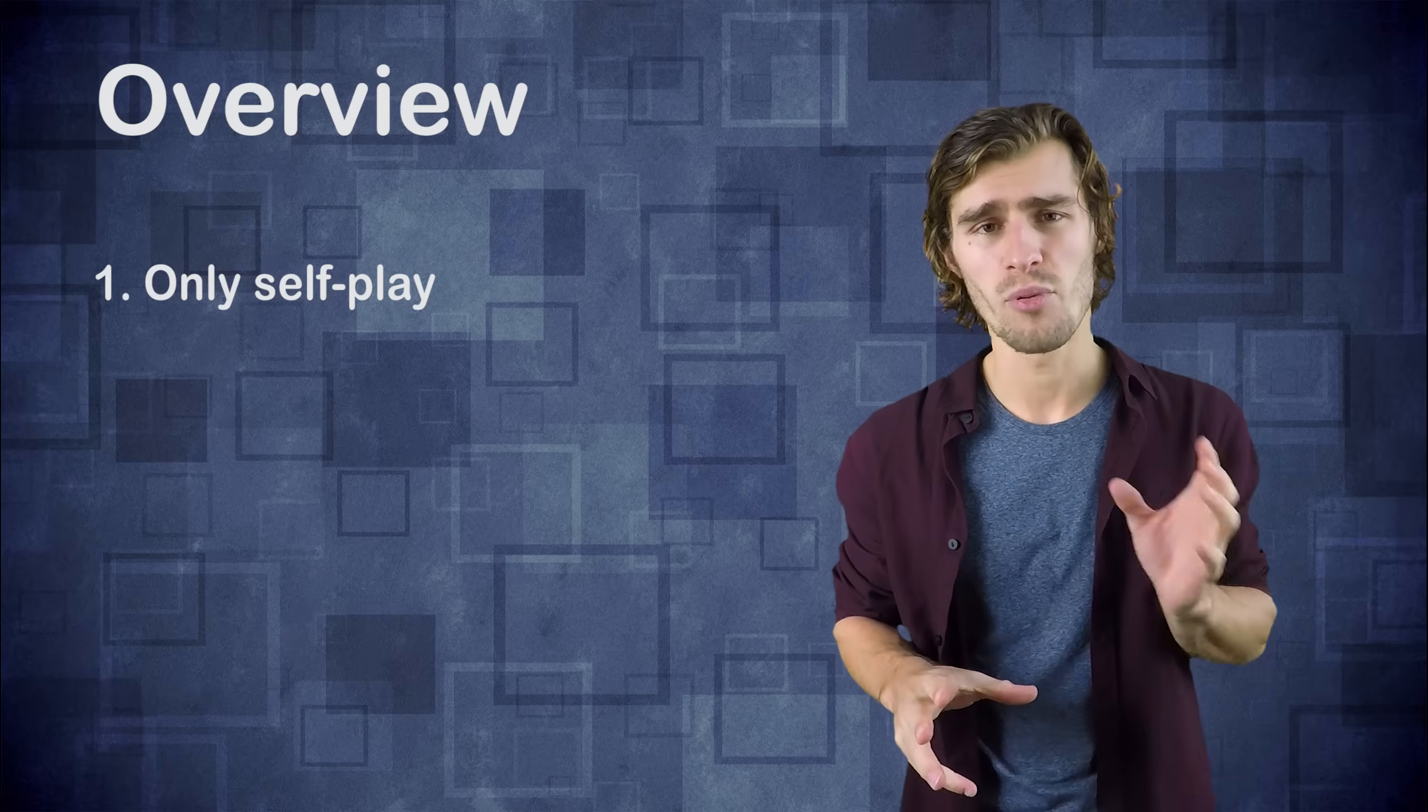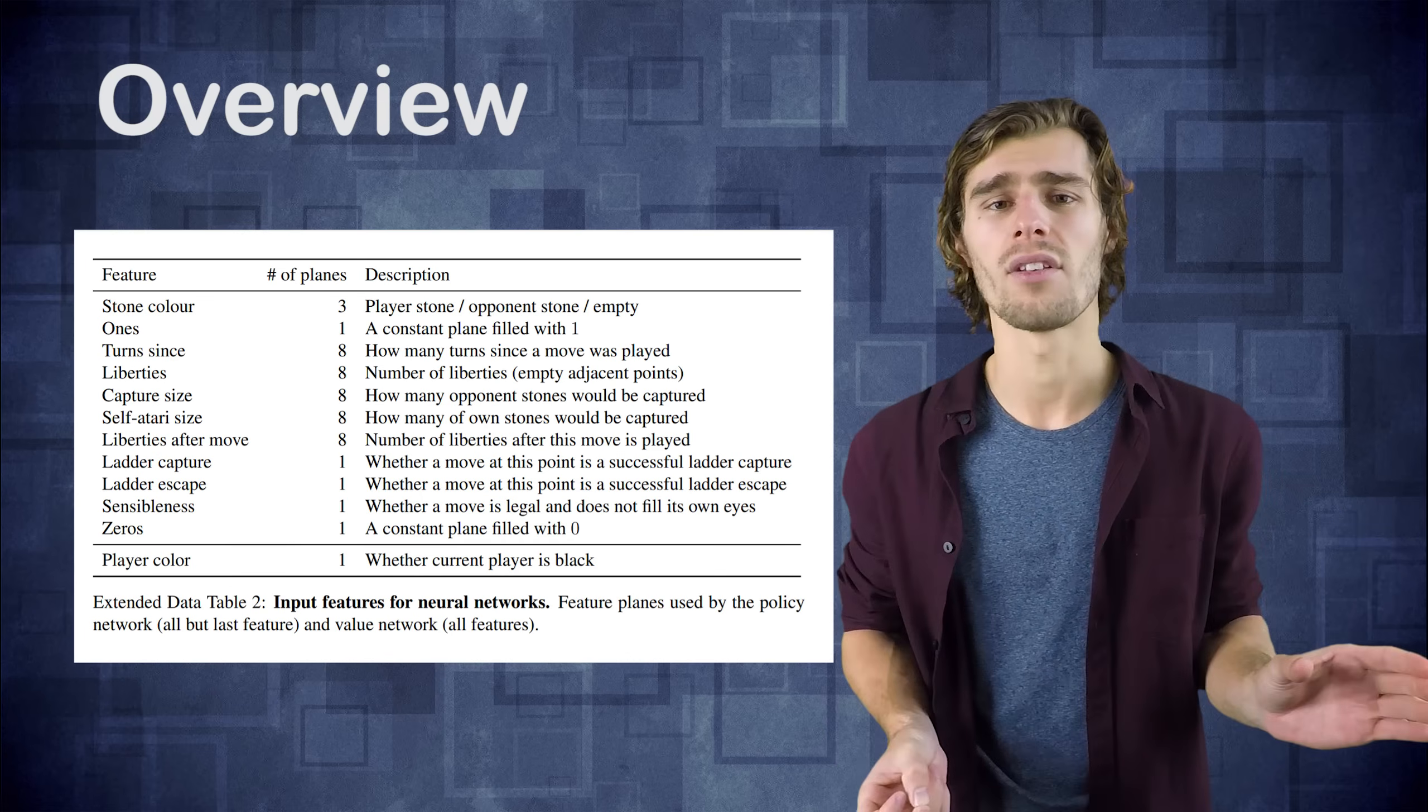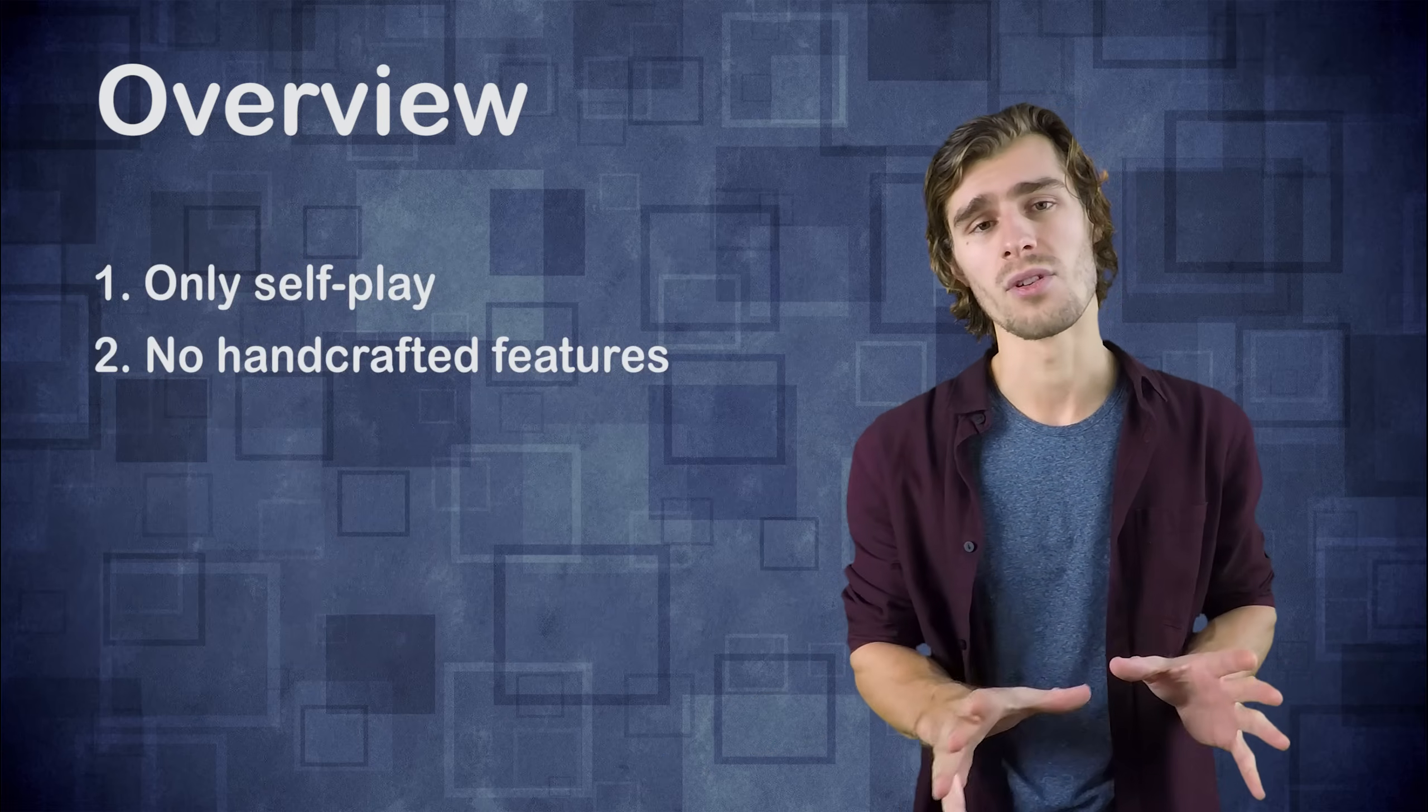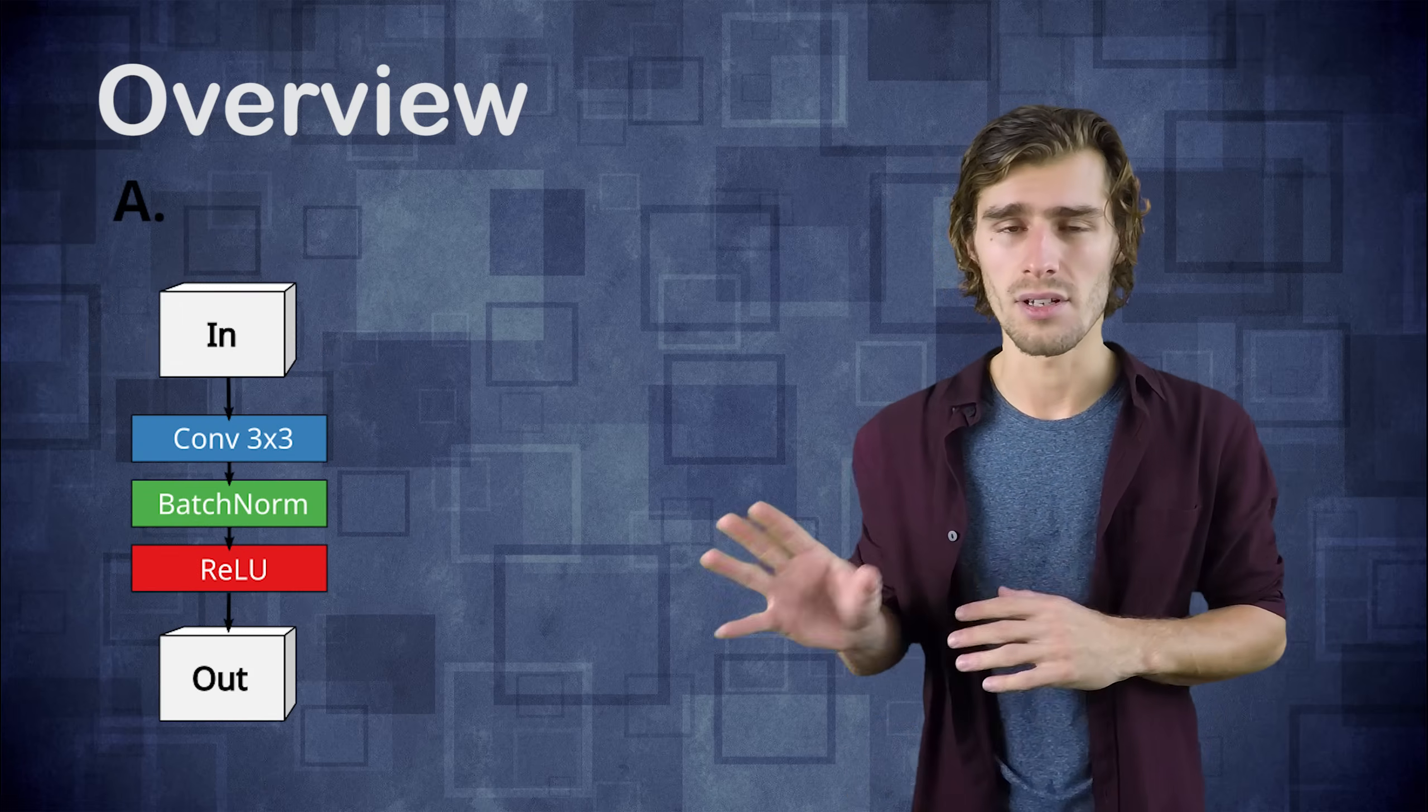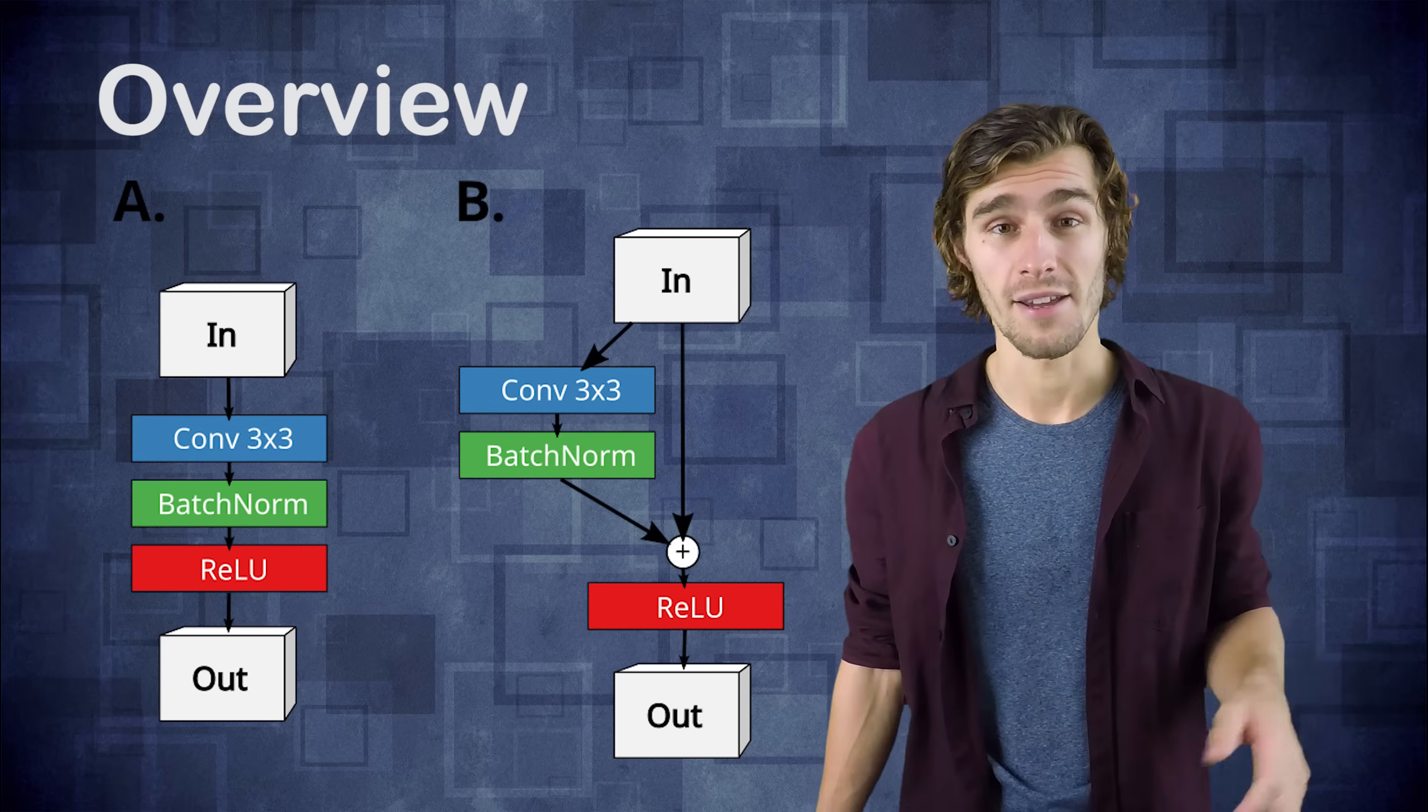The second thing is that the previous version used a lot of predefined features that were handcrafted for the game of Go. The new network AlphaGo Zero uses none of those features and learns entirely by observing the board state. Another interesting thing for me was that they changed from a normal convolutional architecture based on inception to a completely residual architecture. I guess ResNet is here to stay.